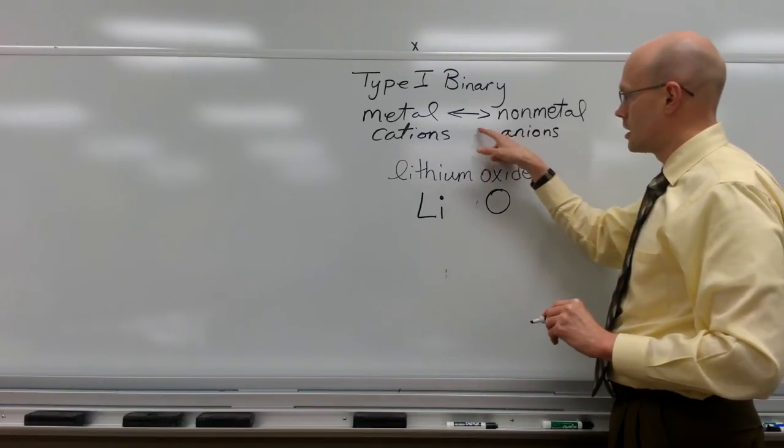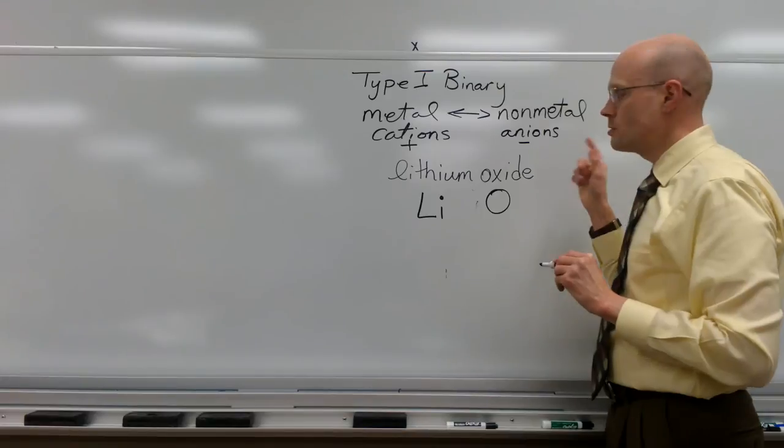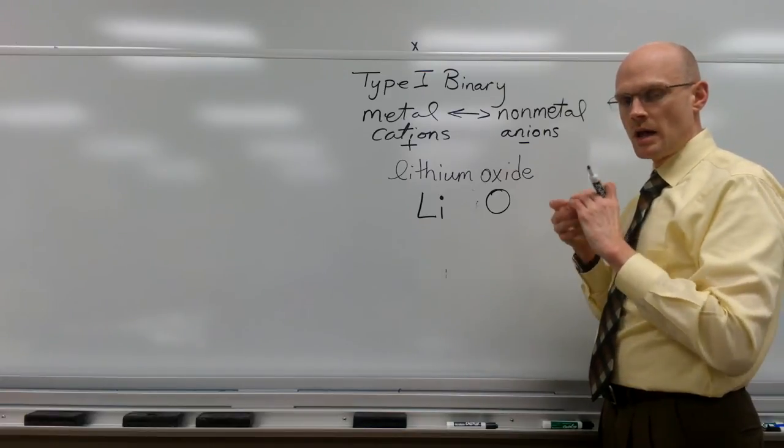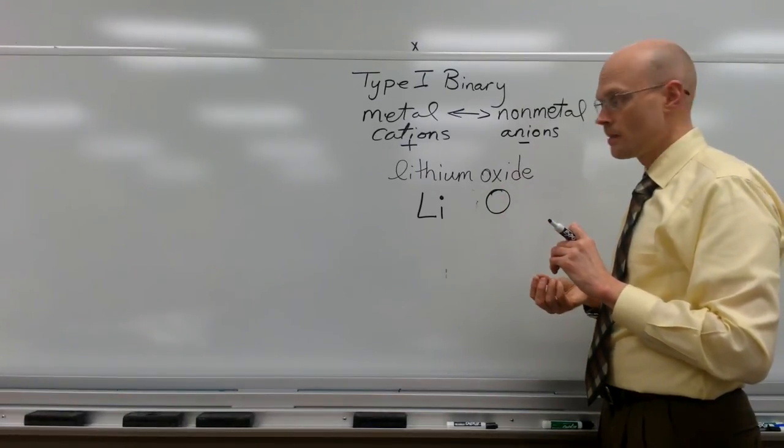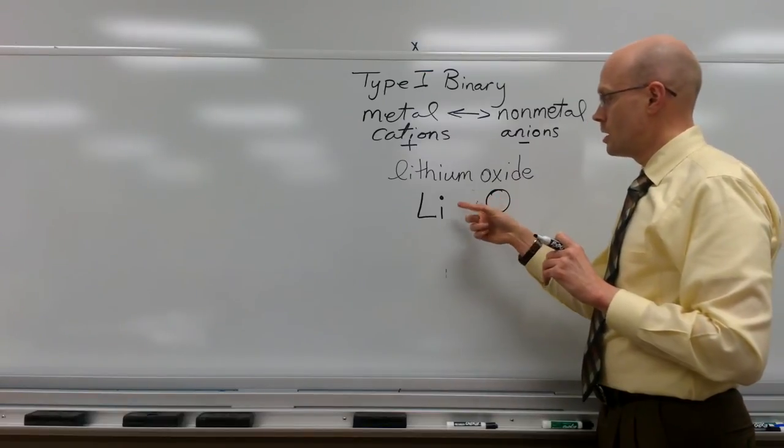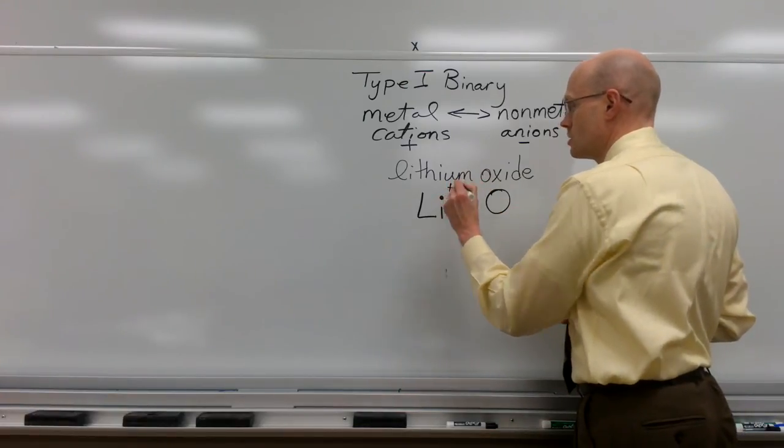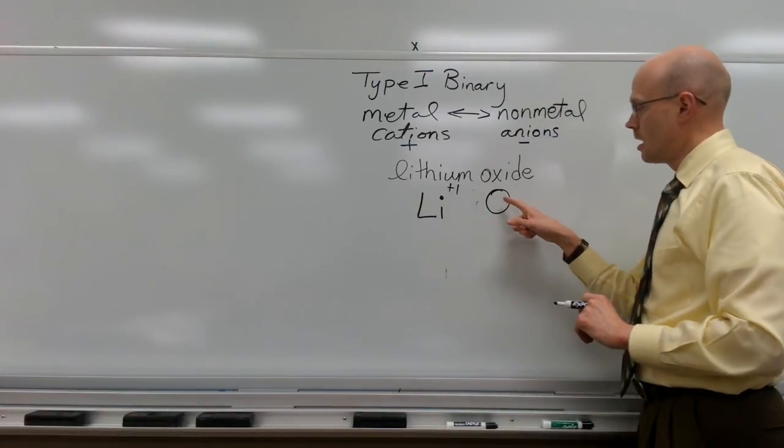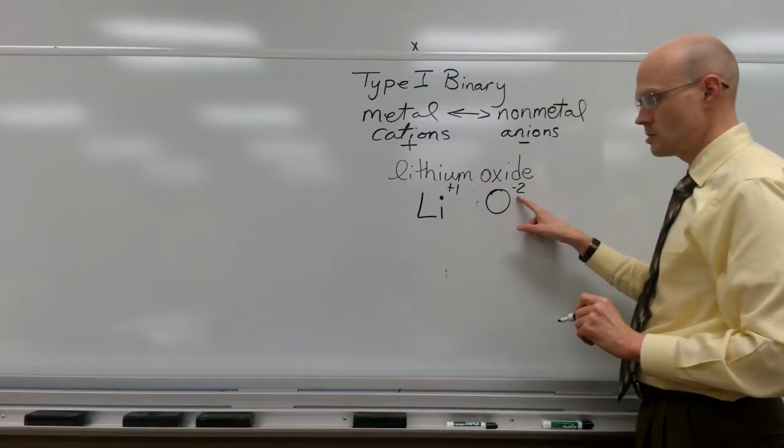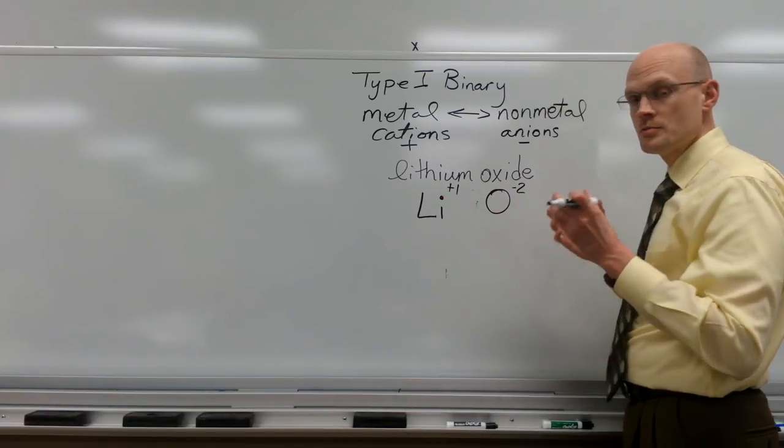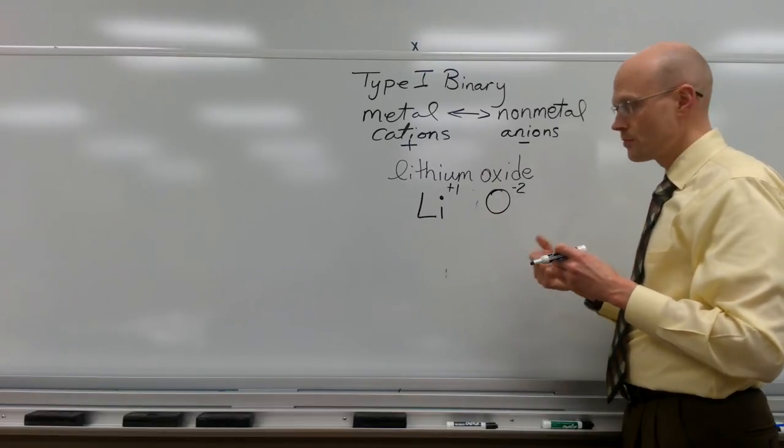But now these are ions that are coming together. And when ions, the positive cation and the negative anion, when those come together their charges must balance out. So that the compound has a net charge of zero. So how do we determine the formula? We go and we get the charges of each one of these ions. The lithium ion has a plus one charge. The oxide ion has a negative two charge. So we have a plus one and a minus two. Now these two ions are going to come together in a specific ratio. So that together there is a net charge of zero. That it will be charge neutral.